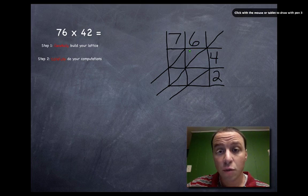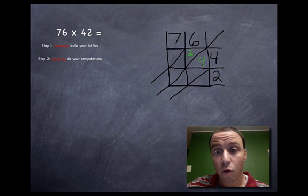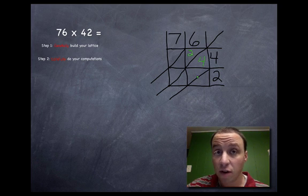So in this box here, six and four intersect, so what's six times four? You better know this: 24. You put the tens place on top, two, and the ones place on the bottom, four. Let's do it again for this box. What are the two numbers that intersect here? Six and two.